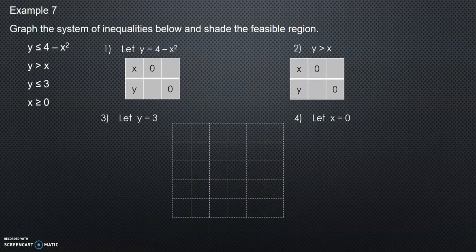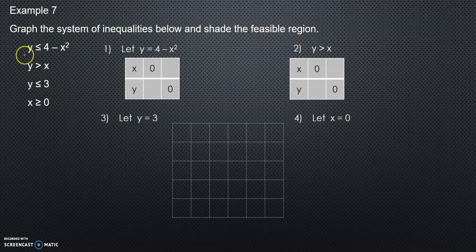We move on to the last example: graph the system of inequalities and shade the visible region. From the inequalities: the first is included — solid line. The second is not included — dotted. The third is included — solid. The fourth is included — solid.